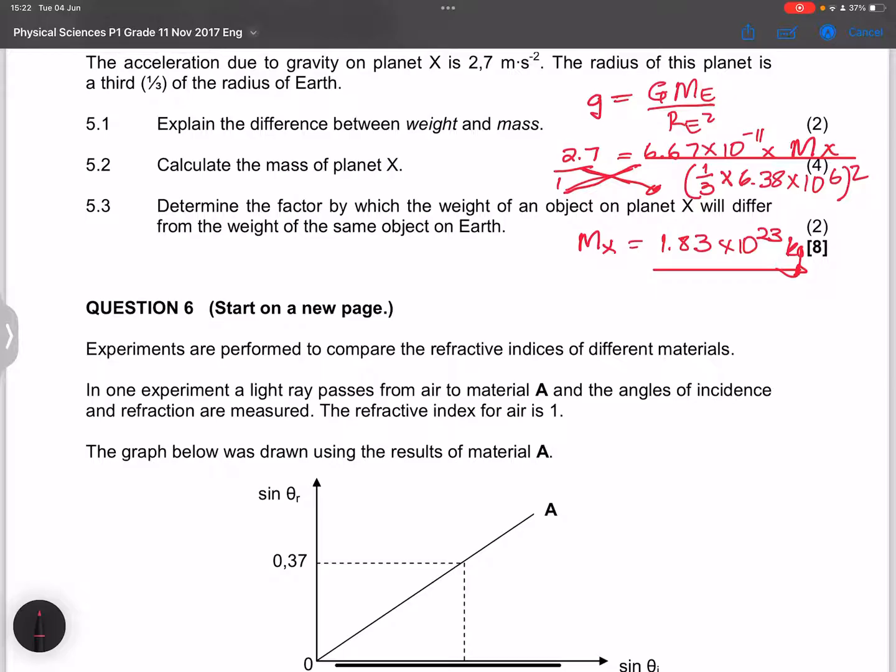Now they said to us, determine the factor by which the weight of an object on planet X will differ to the weight of the same object on planet Earth. So the factor by which the weight of the object on X, so weight on X divided by weight on Earth. Now notice the mass would be the same.